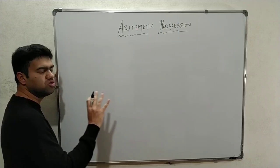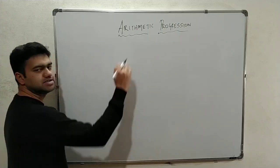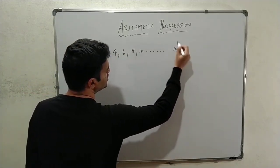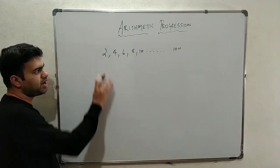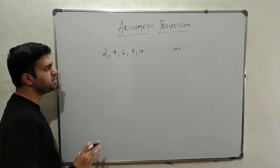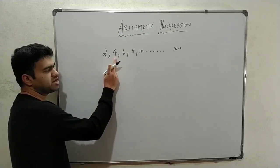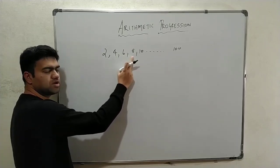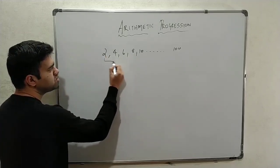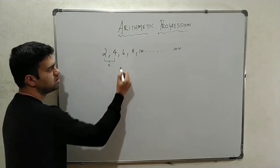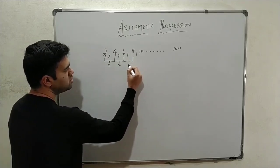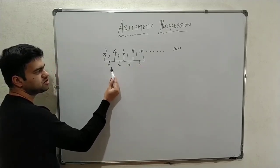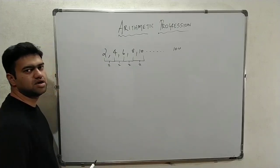A number sequence has a particular format. For example, a simple example: 2, 4, 6, 8, 10, 100. In arithmetic progression, the difference between the first and second term is equal to the difference between the second and third term, the third and fourth term, and so on. For example, 4 minus 2 is 2, 6 minus 4 is 2, 8 minus 6 is 2 — equal differences every time. That is arithmetic progression.